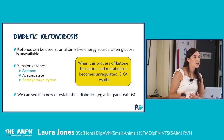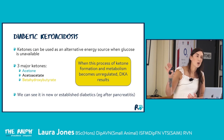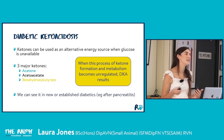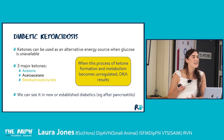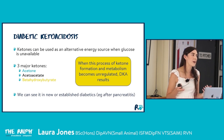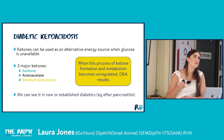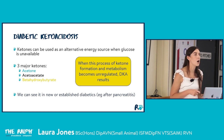Three major ketones contribute to DKA: acetone, acetoacetate and beta-hydroxybutyrate (BHB). Two of the three are acidic compounds, causing extra acid accumulation in the bloodstream — producing the metabolic acidosis seen in these patients. DKA can occur not just in undiagnosed diabetics whose initial signs were missed, but also commonly in established diabetics who've had problems with diabetic control at home or a bout of pancreatitis making diabetes harder to stabilise.